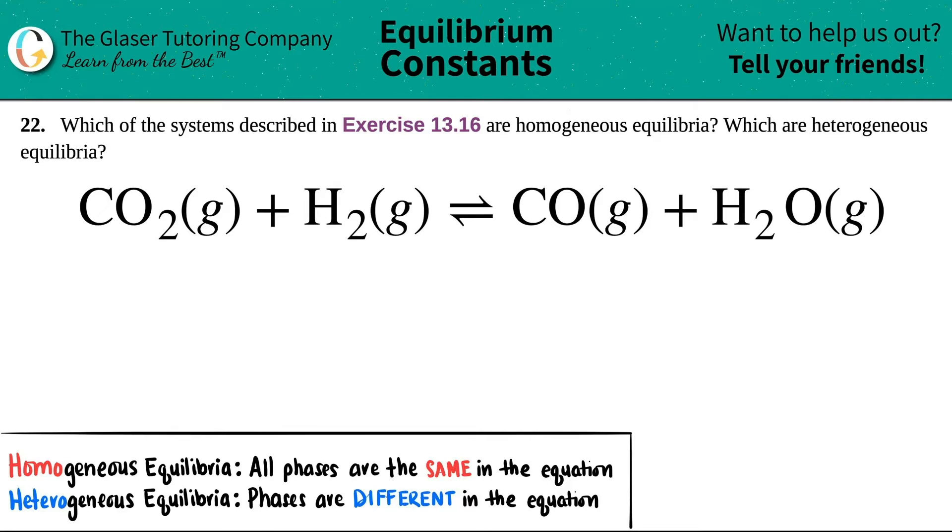Number 22: Which of the systems described in exercise 13.16 are homogeneous equilibria and which are heterogeneous equilibria? I pulled up one balanced equation from that exercise list. In this we have to figure out if CO2 gas plus H2 gas which comes to equilibrium with CO gas plus H2O gas, whether this is a homogeneous equilibria or a heterogeneous equilibria.